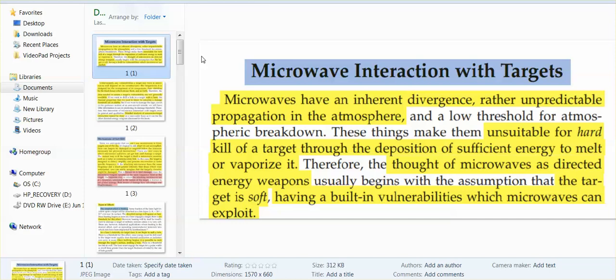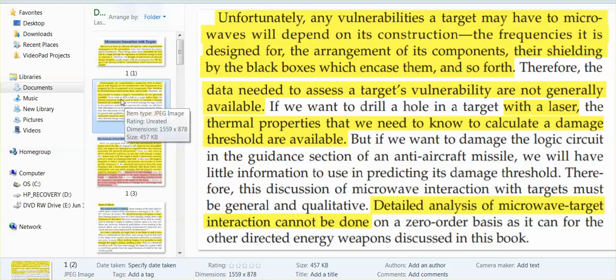Microwave interaction with targets. They are unpredictable. They have unpredictable propagation in the atmosphere. They're unsuitable for hard kill of a target, meaning if they hit you with a microwave, you wouldn't fall down and die, but they're good for soft kills, and the soft kill of the microwave-directed energy weapons is they do exploit your particular vulnerabilities.